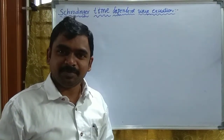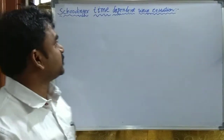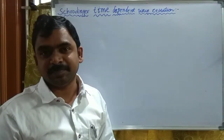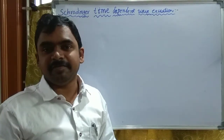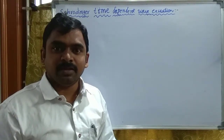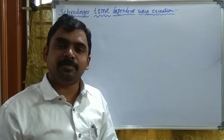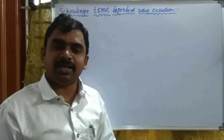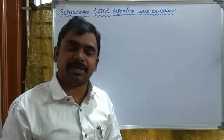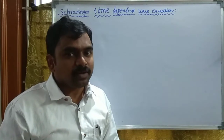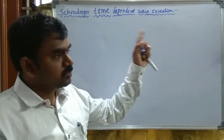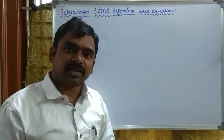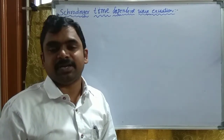Hello students, welcome. Today I would like to explain the concept of the Schrödinger time-dependent wave equation. The Schrödinger time-dependent wave equation is the equation of motion for de Broglie's matter waves. This is also the fundamental equation for quantum mechanics. To follow this equation, we have to introduce a mathematical expression for de Broglie's matter waves.